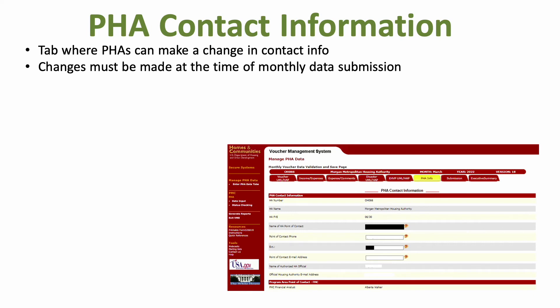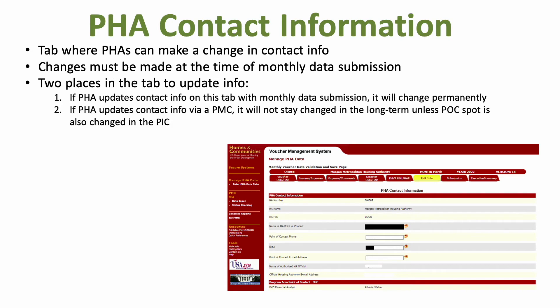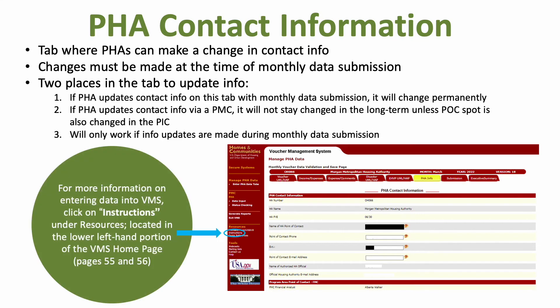Contact information can be changed by the PHA in this tab at the time of monthly data submission. There are two places where PHA contact information can be changed. Any contact information changed on the PHA Info tab at the time of monthly submission will remain changed permanently. However, if a PHA updates their contact info via a PMC, it will only save for one month before it reverts to the information the system administrator entered. If a PHA wants to make long-term changes to contact information, they should contact their PIC coach to request that the permanent change be made in the system.